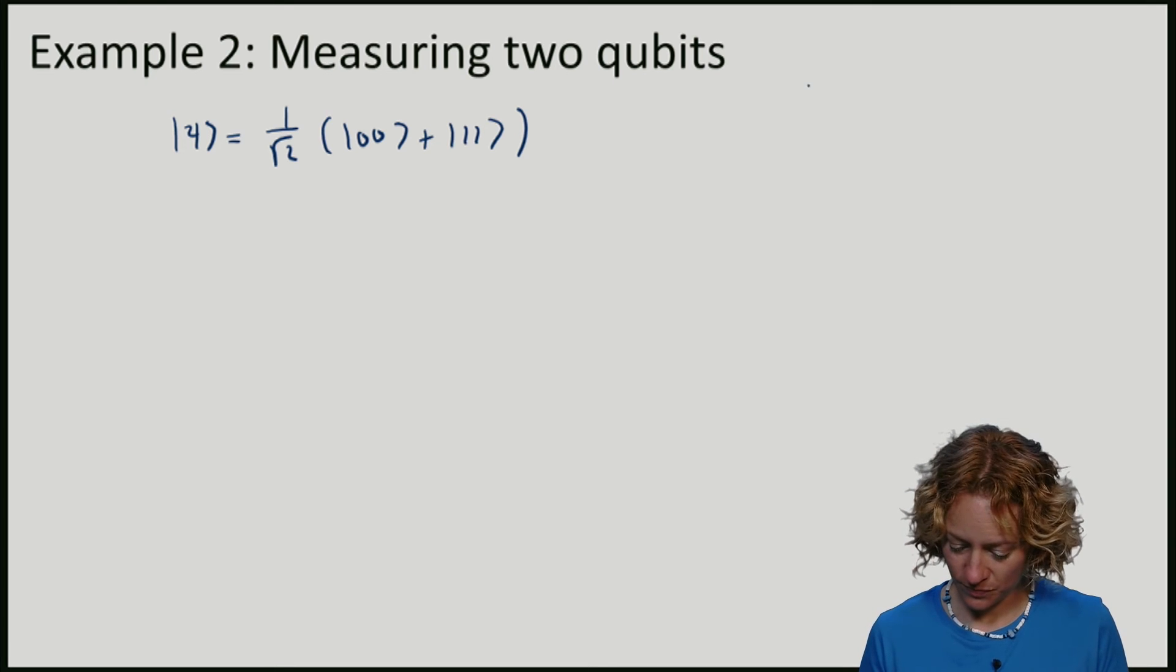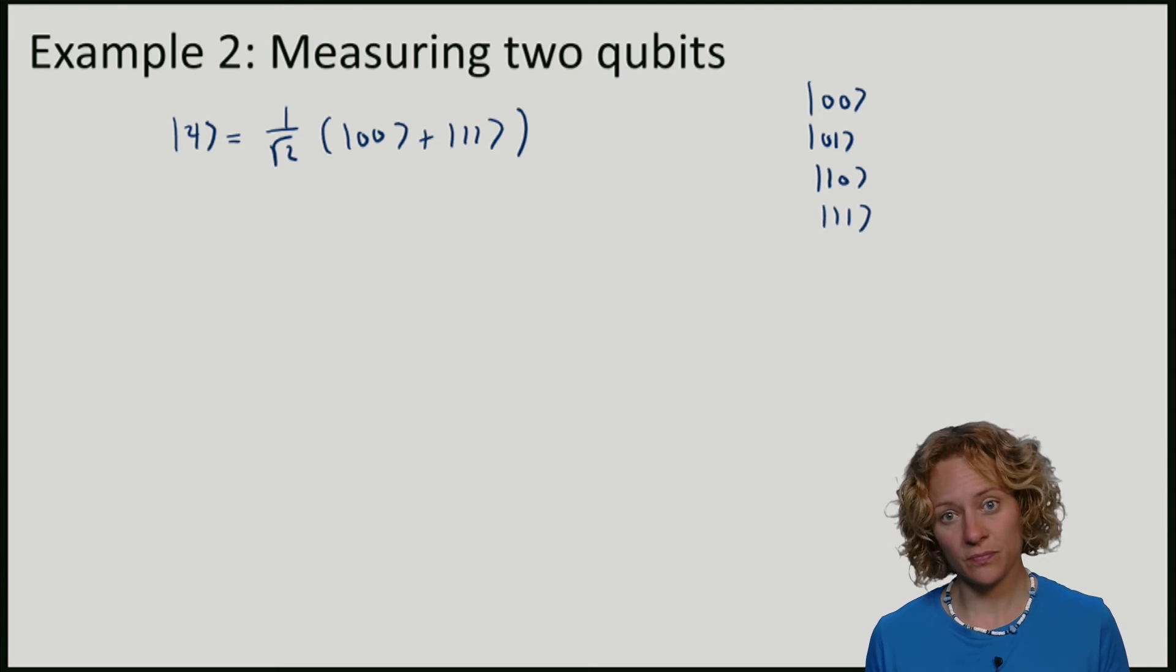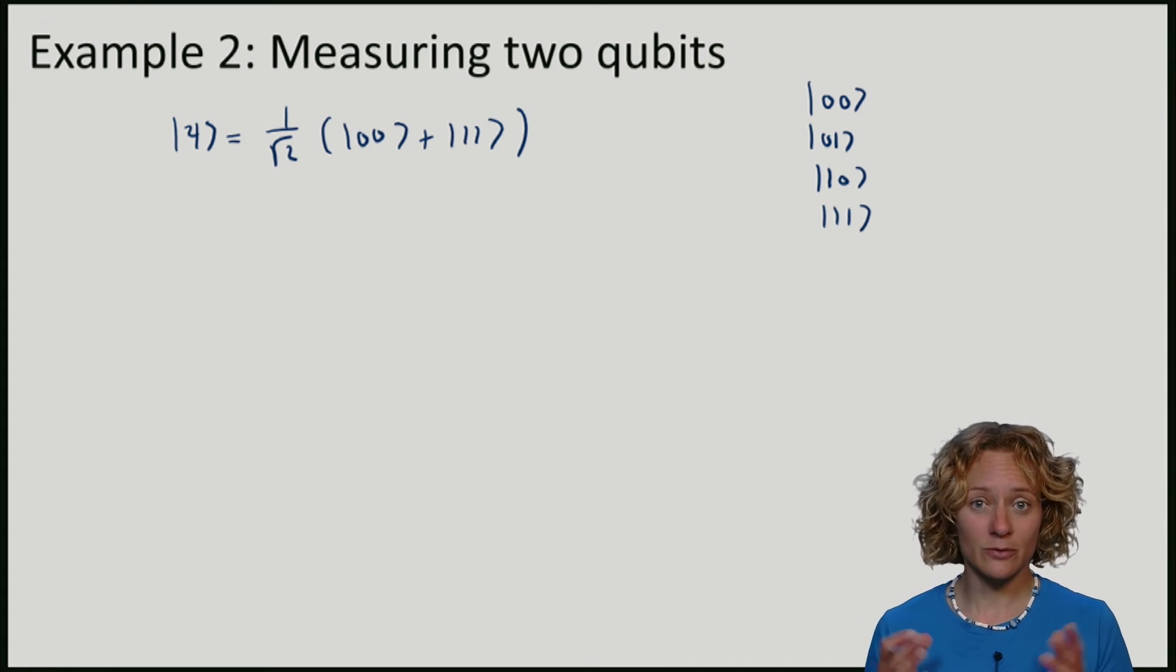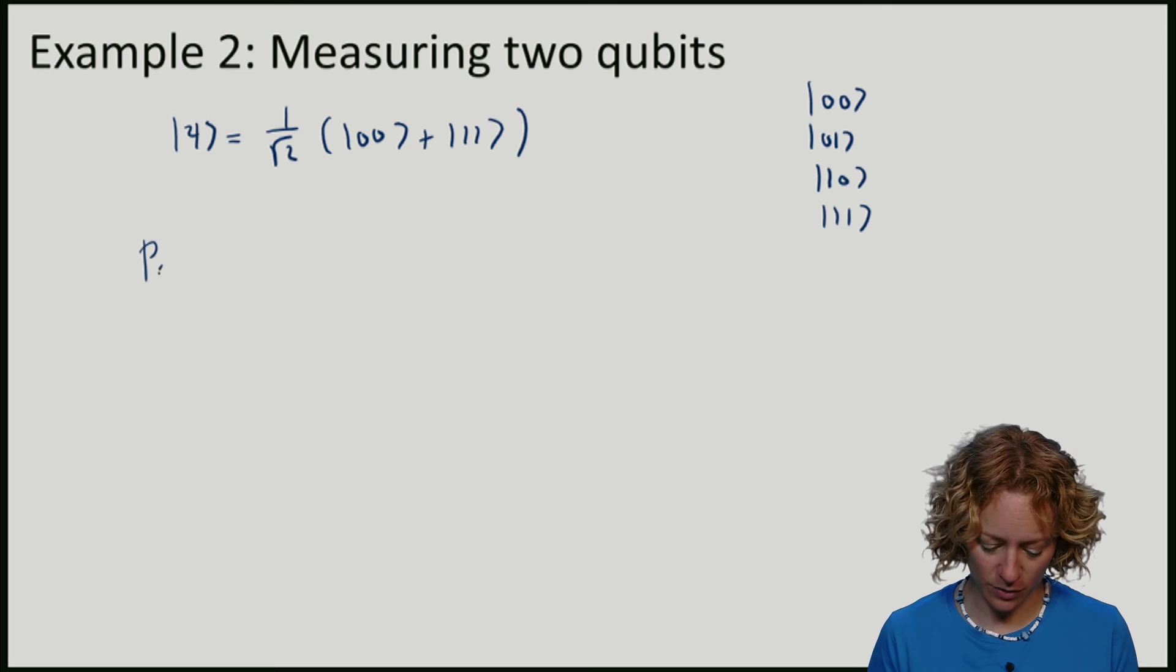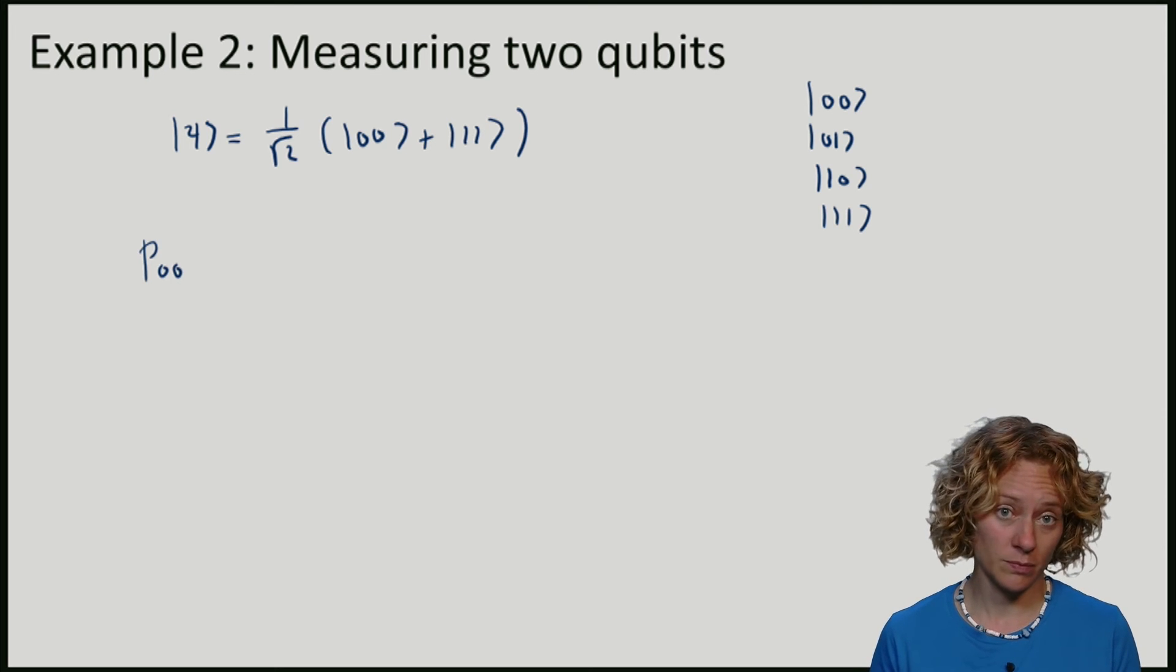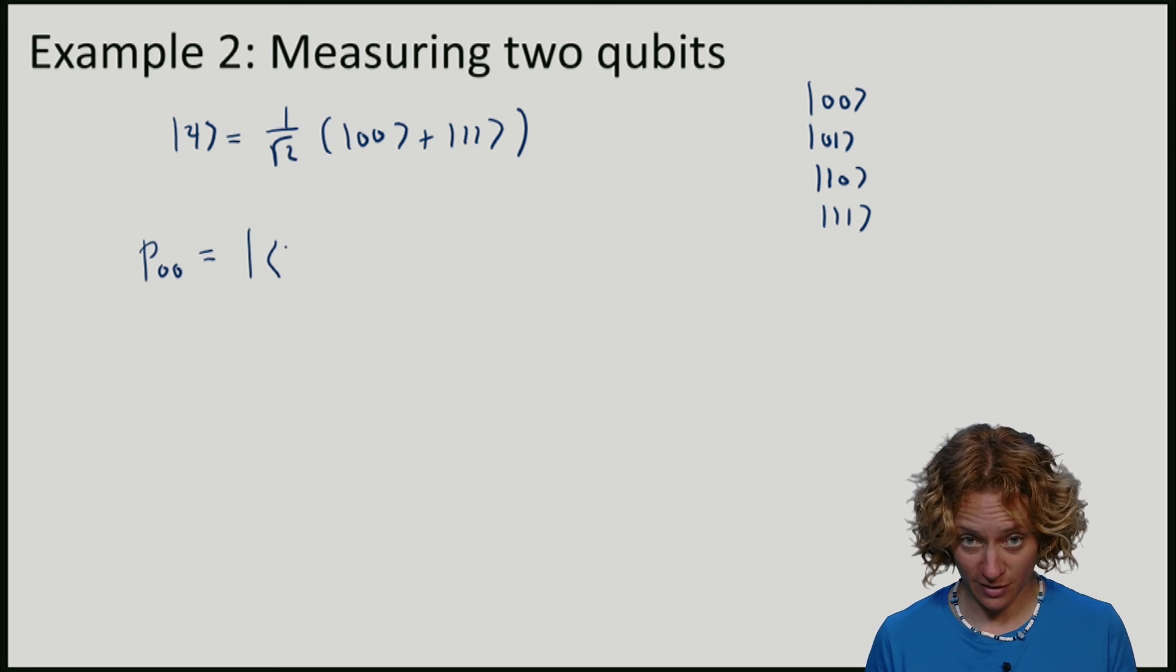And we'll measure it in the standard basis, given by zero zero, zero one, one zero, and one one. So these are the elements of the standard basis. And now let's apply our rule to find what is the probability of observing measurement outcome zero zero. We've probably already become an expert at this calculation.